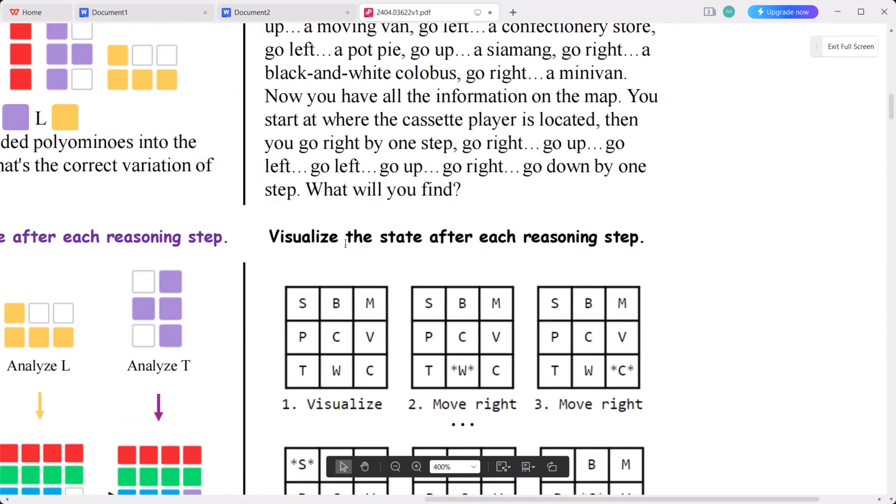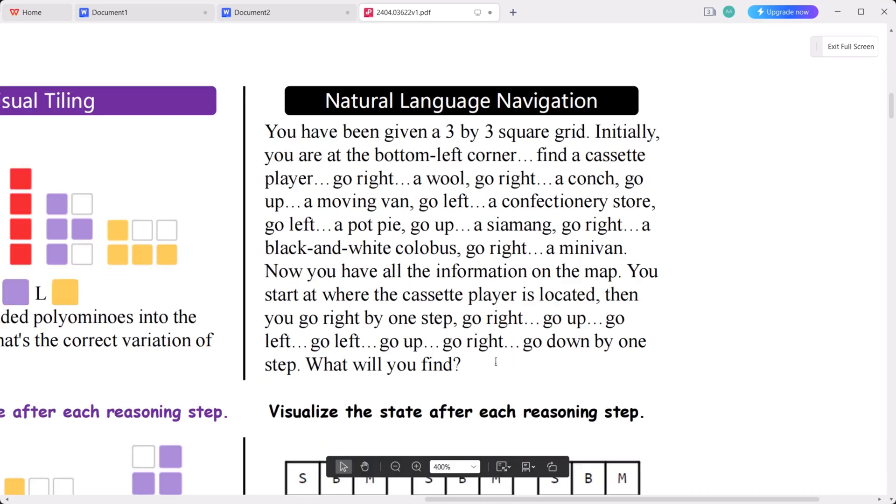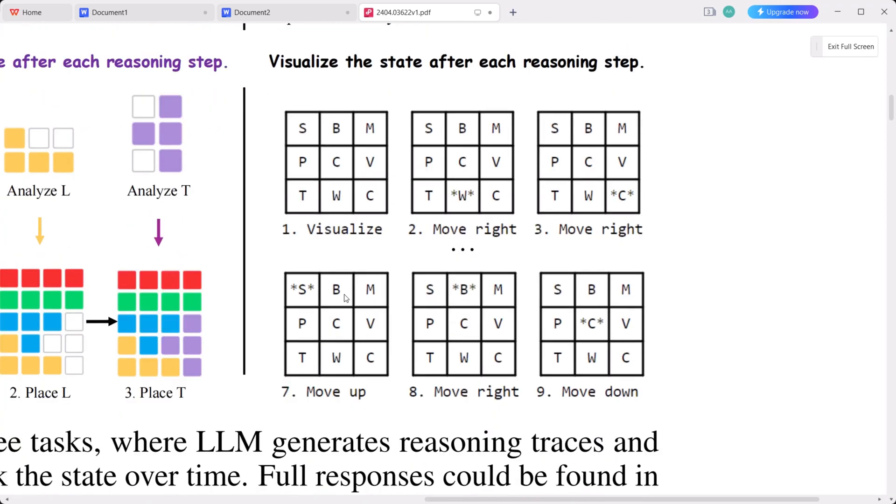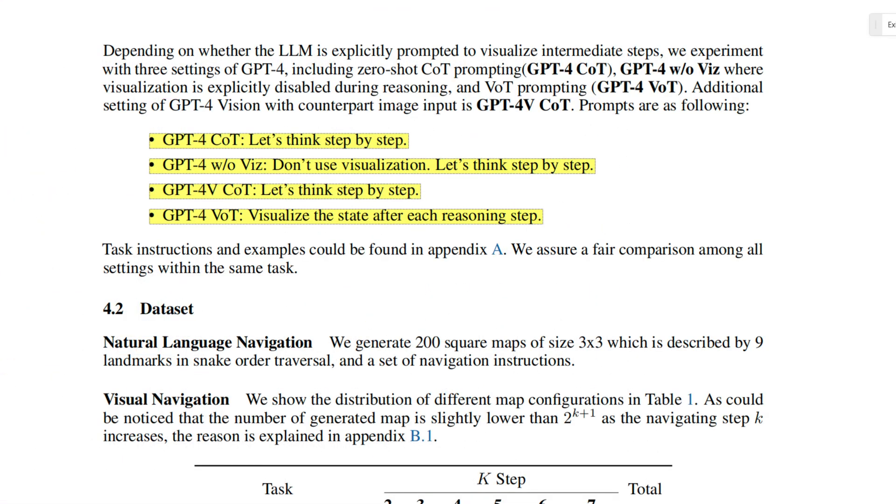In this example, we have natural language navigation where a 3x3 grid is described and step-by-step instructions are provided. We actually dictate the moves, and at the end we ask where are you, what did you find? This helps in visualizing each step. The grid position marked with stars indicates where the large language model believes it is at any given moment. This experiment tested four different versions using GPT-4 to demonstrate this concept.